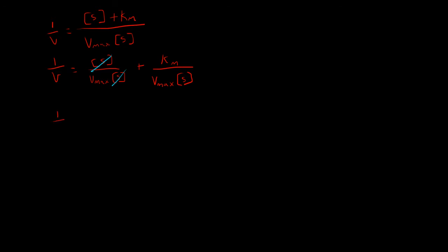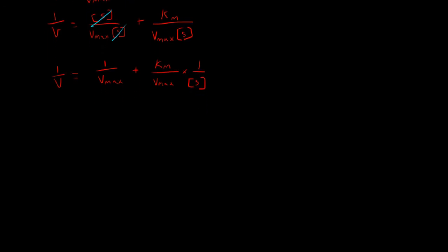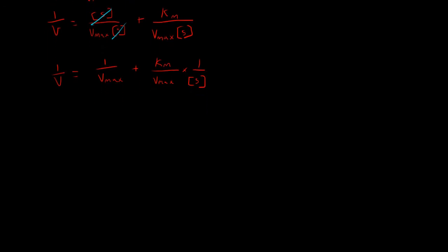And the way this is set up, we can cancel out our concentration of substrates here. So we're left with one over V equals one over Vmax plus, and in this case, I'm actually going to separate this out even further to Km over Vmax times one over S. And in fact, in this situation, when we have it expanded and laid out like this, we can look at this just like a simple line equation.